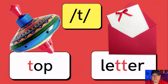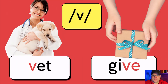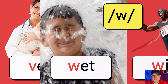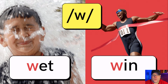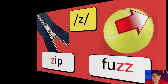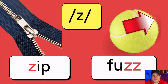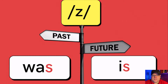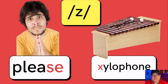T as in top or letter. V as in vet or give. W as in wet or win. Y as in yes or onion. Z as in zip or fuzz. Z as in sneeze or laser. Z as in was or is. Z as in please or xylophone.